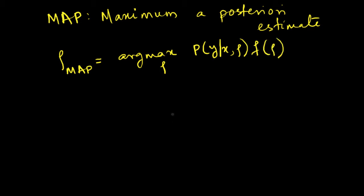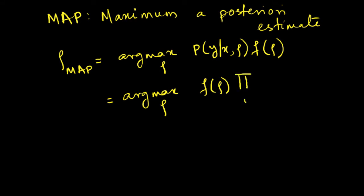We also know that our input values are not just one but actually many. So this becomes argmax over rho of the distribution of rho times a product over all input-output values in our training data. Here we have assumed that our input-output combinations are all independent, which is a reasonable assumption. Note that in naive Bayes we assume the rho values are independent of each other, but we are not doing that right now.